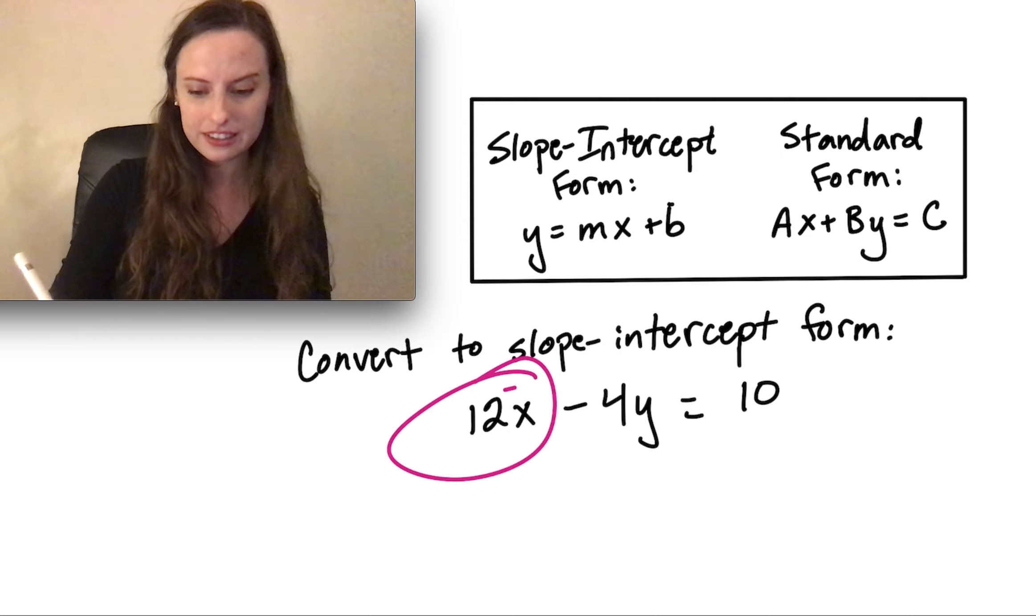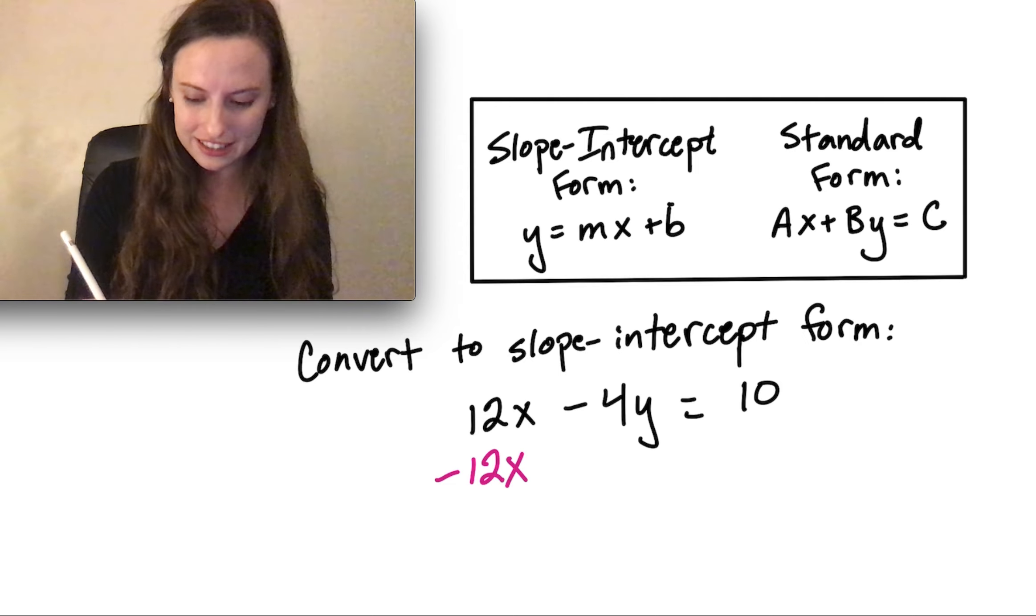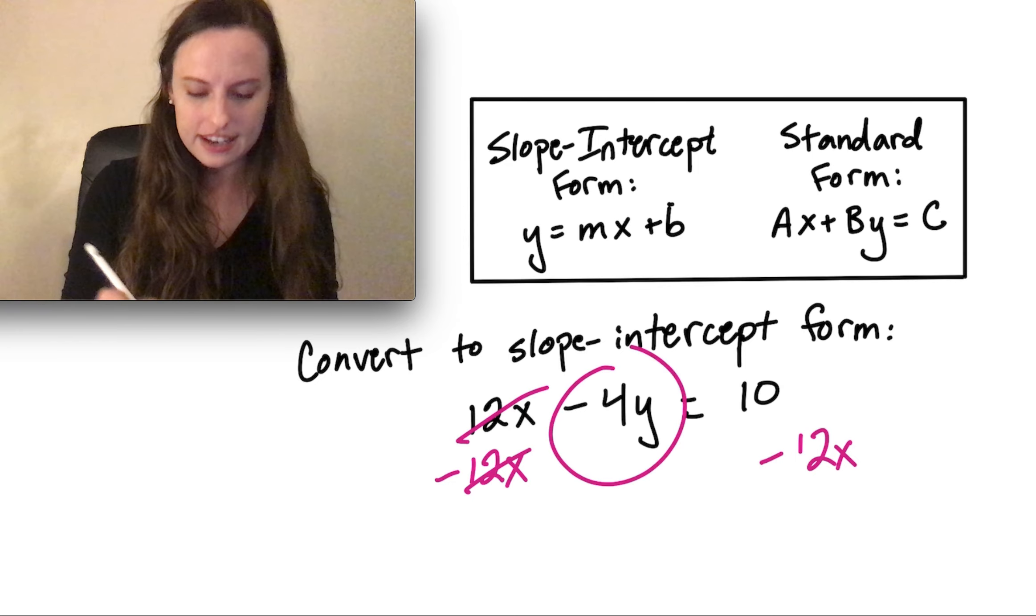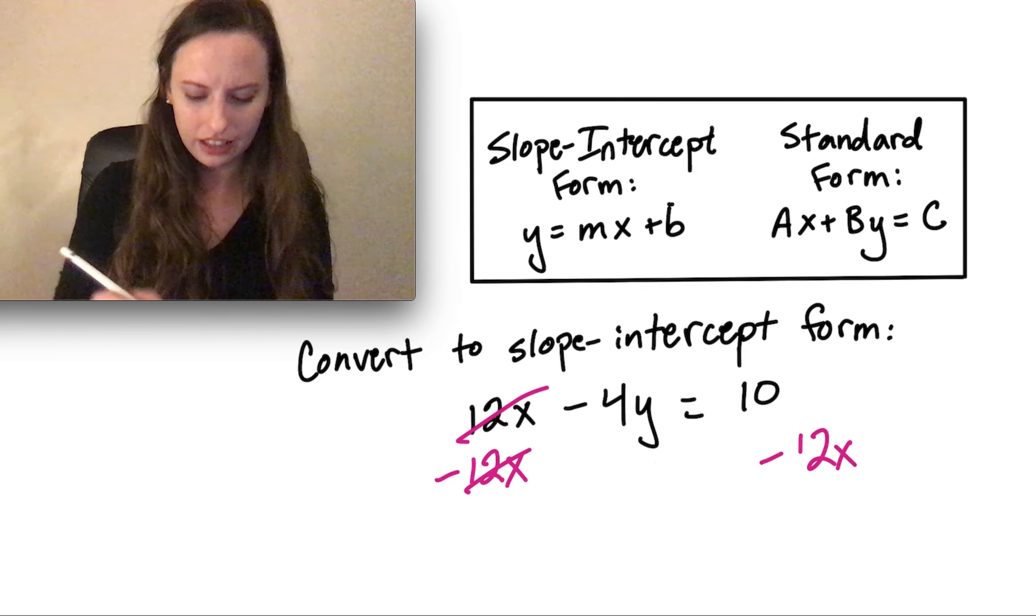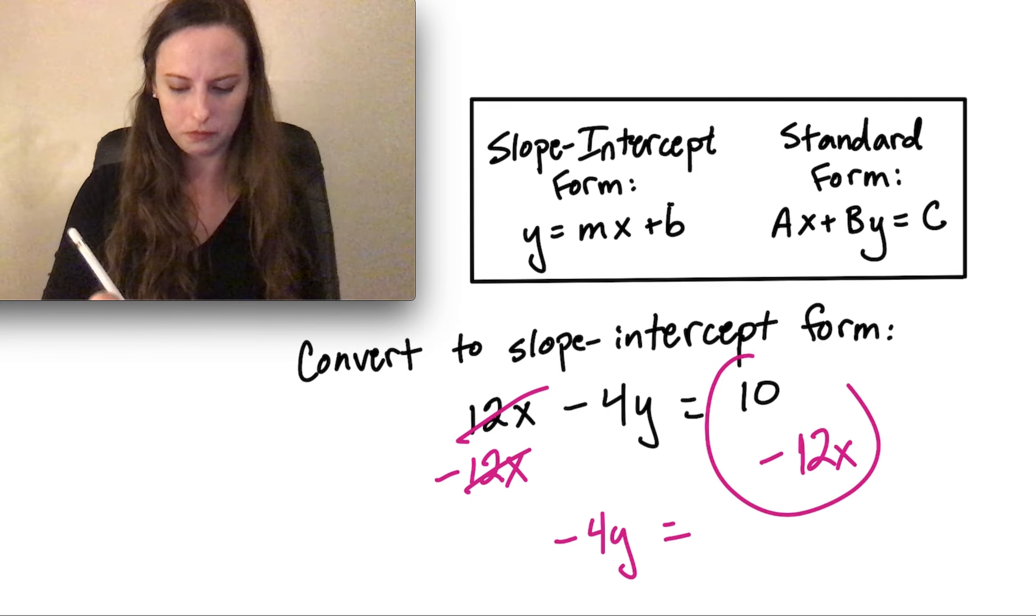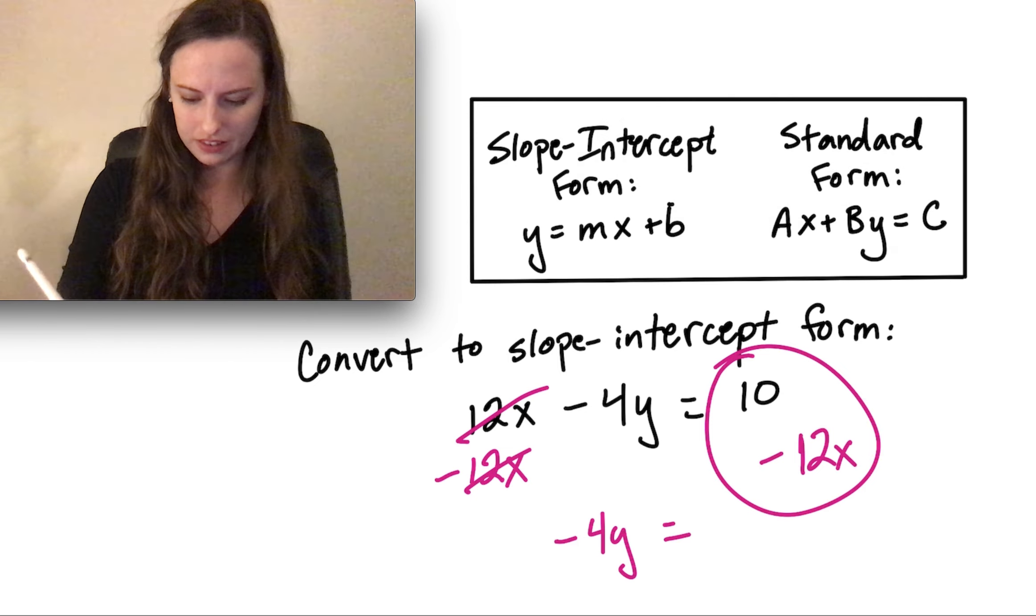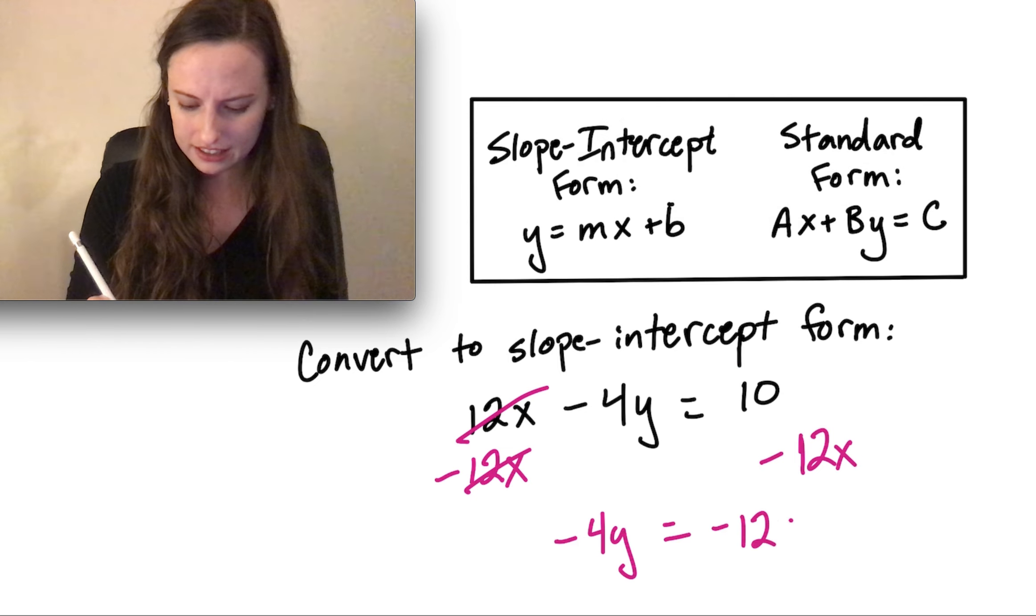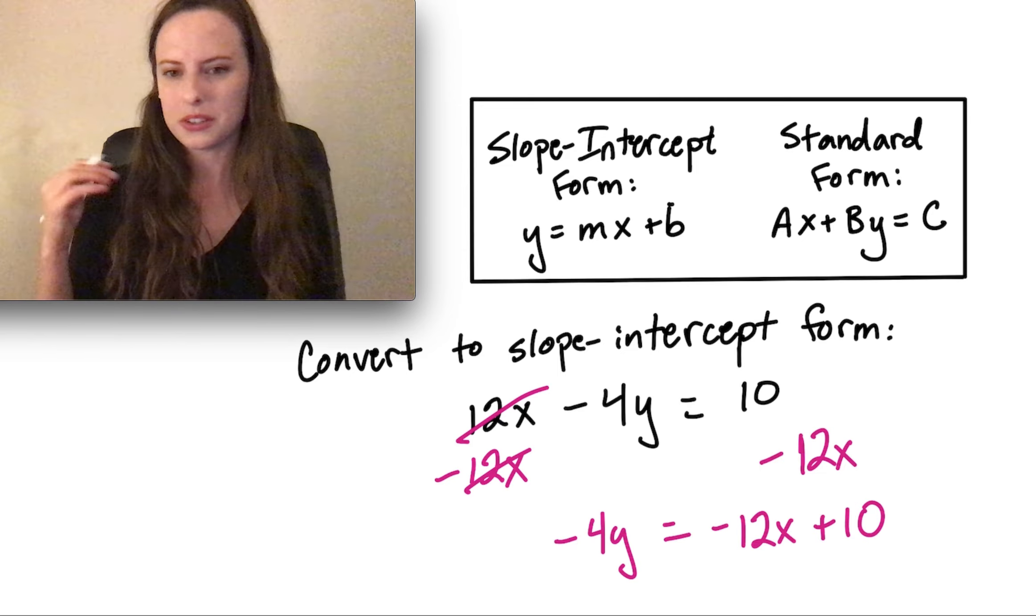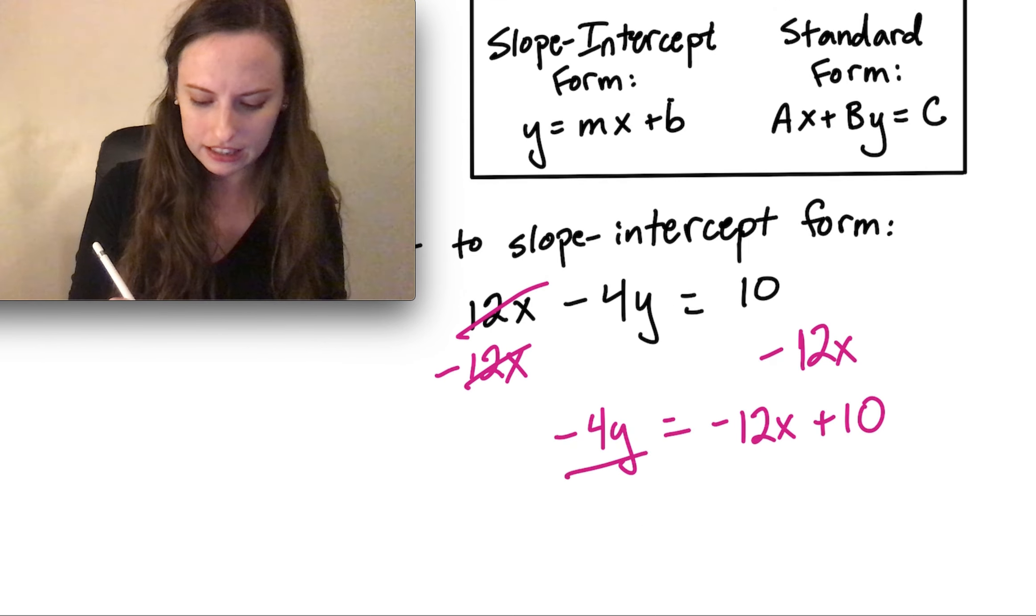Let's start by moving it over. We have 12x, so we can move that over by using the opposite sign, negative 12x. Those cancel out. We're left with this negative 4y on the left equals, and then we'll write all of this together in one line. Negative 12x plus 10.